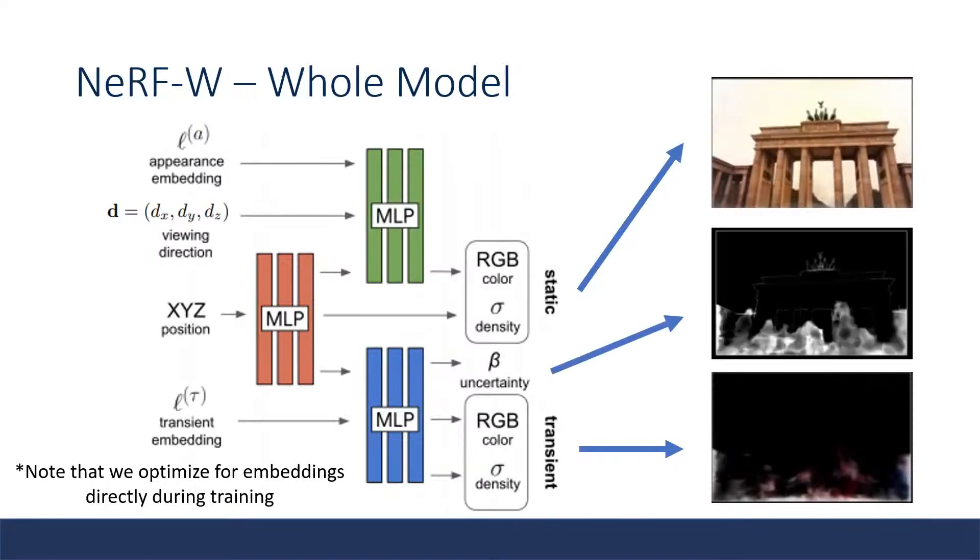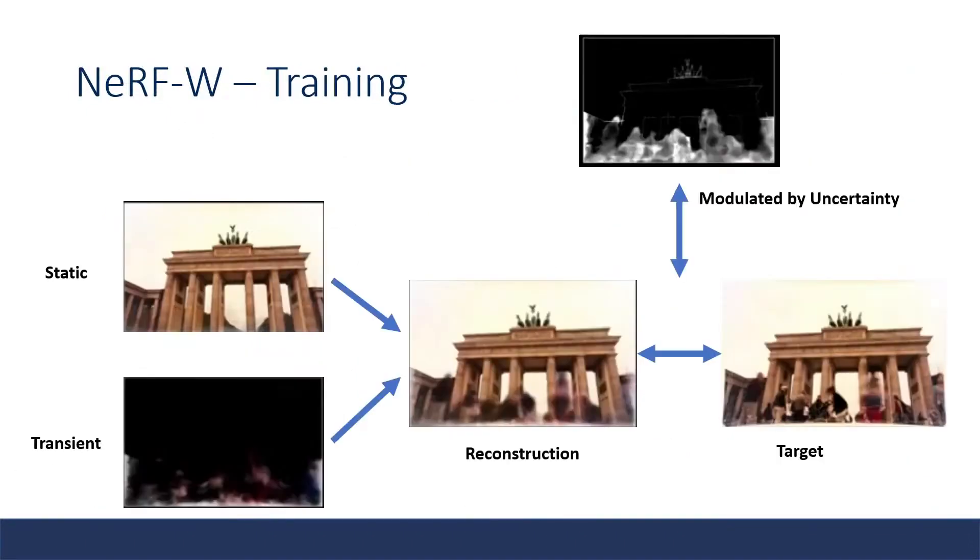In addition to this, we also output an uncertainty field which evaluates which pixels are likely part of our transient objects. During training, this uncertainty field modulates our training loss by reducing the effect that transient phenomena has on our loss. So NeRF-W is trained by merging static and transient portions of the image, and then given a full reconstruction image, this is compared to a target image and trained using a reconstruction loss.